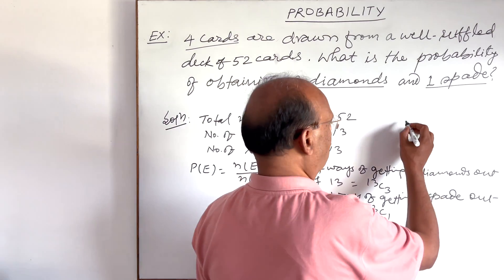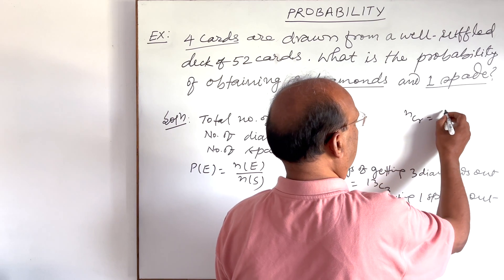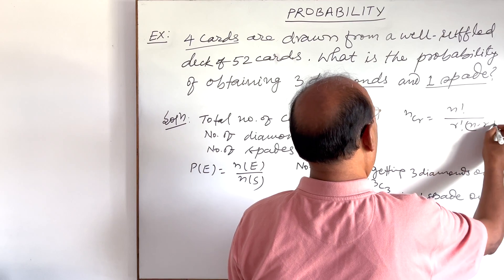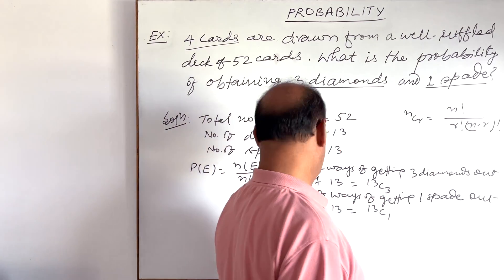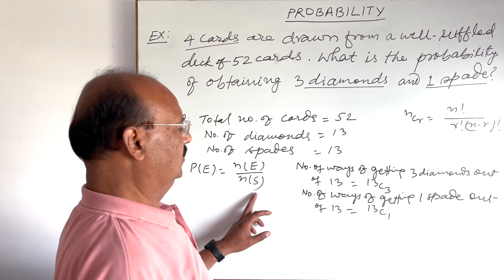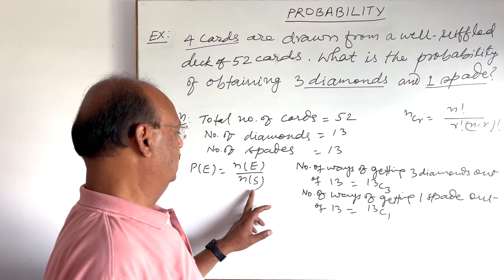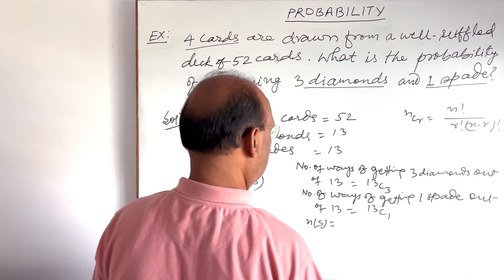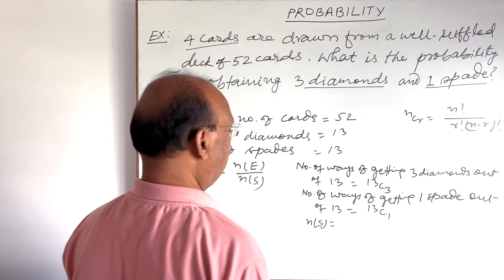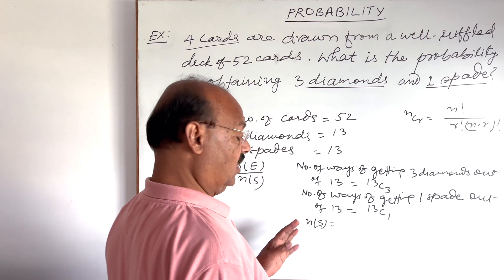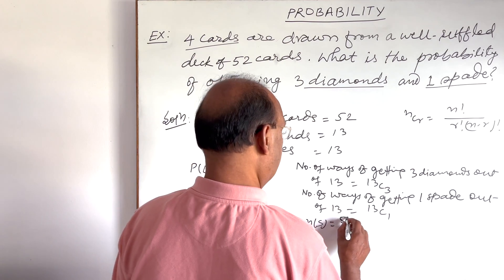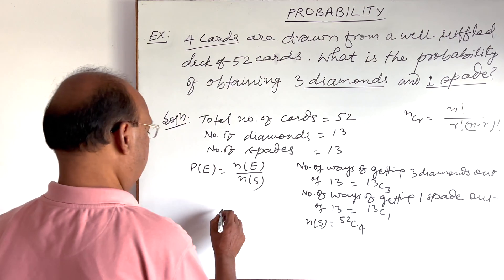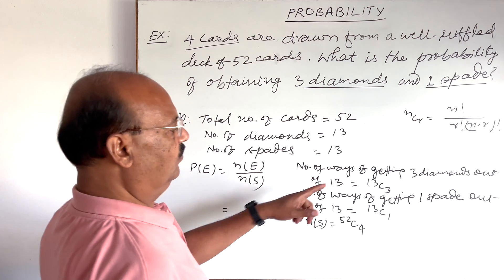Here we will use the formula nCr is equal to n factorial by r factorial times n minus r factorial. And in denominator, sample space, so here n(S), this sample space will be total 4 cards are drawn out of 52, so that will be 52C4.